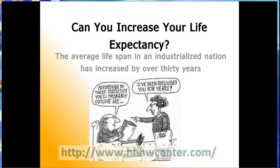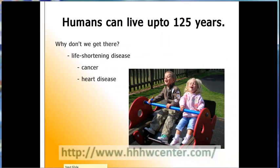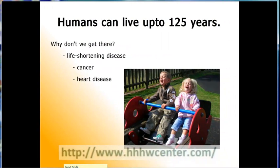Rising longevity along with falling fertility rates are the primary reasons for the recent aging of the world's population, in more affluent areas such as the United States and Europe, causing their citizens to start graying rapidly. The human lifespan limit is believed to be close to 125 years, although very few of us reach that ripe old age.